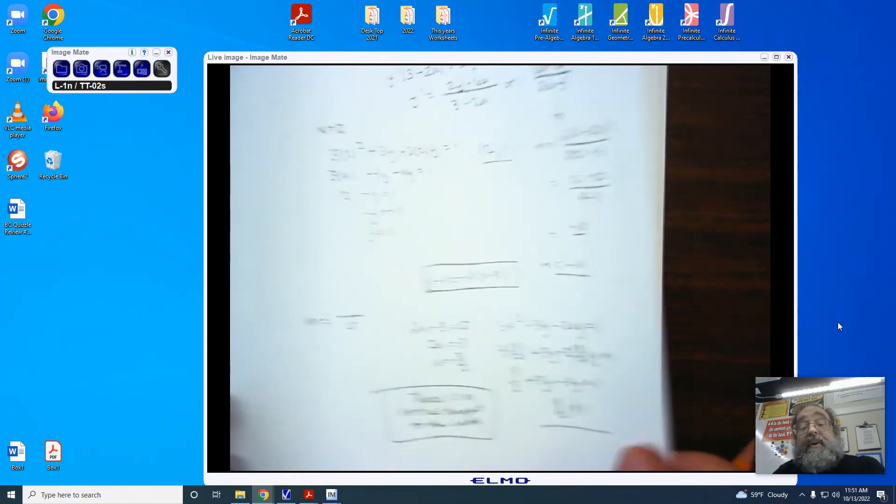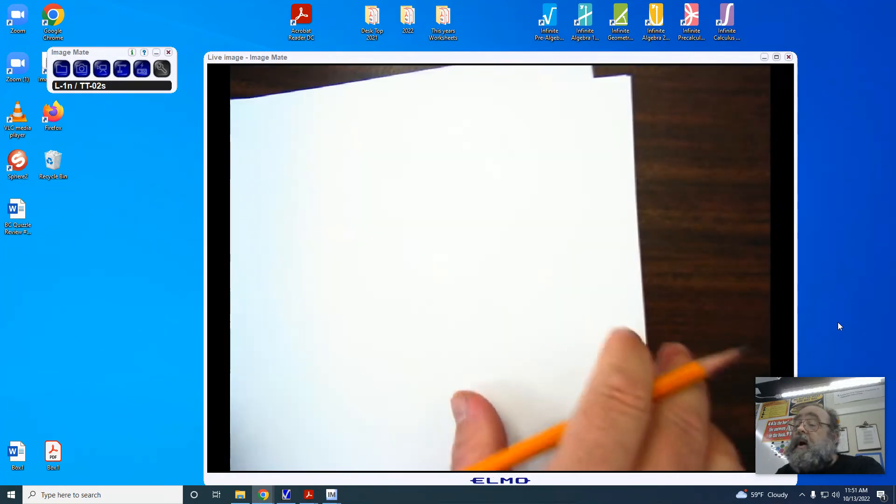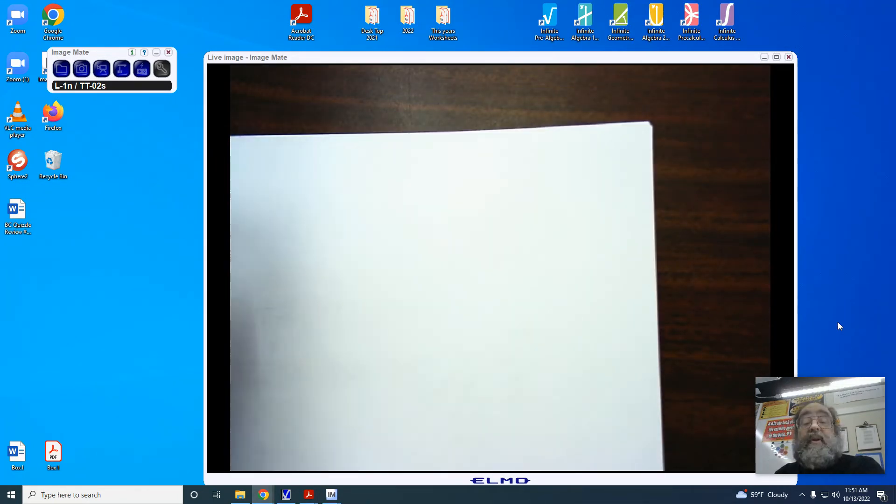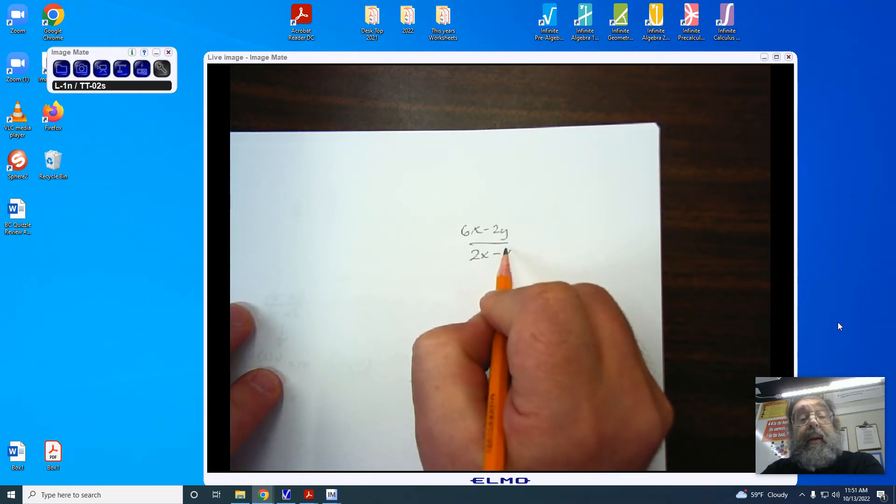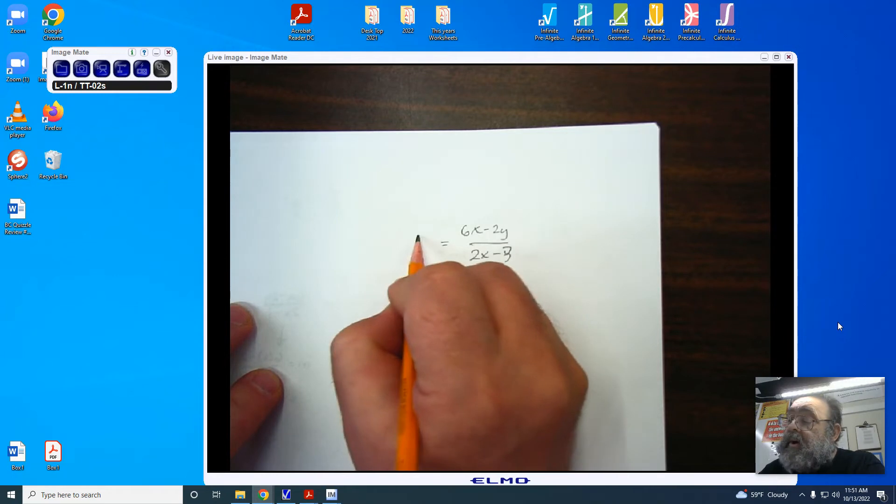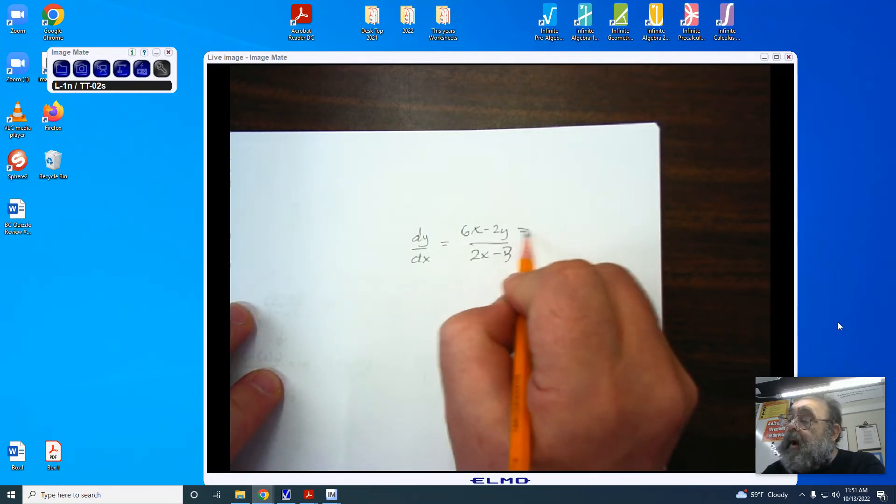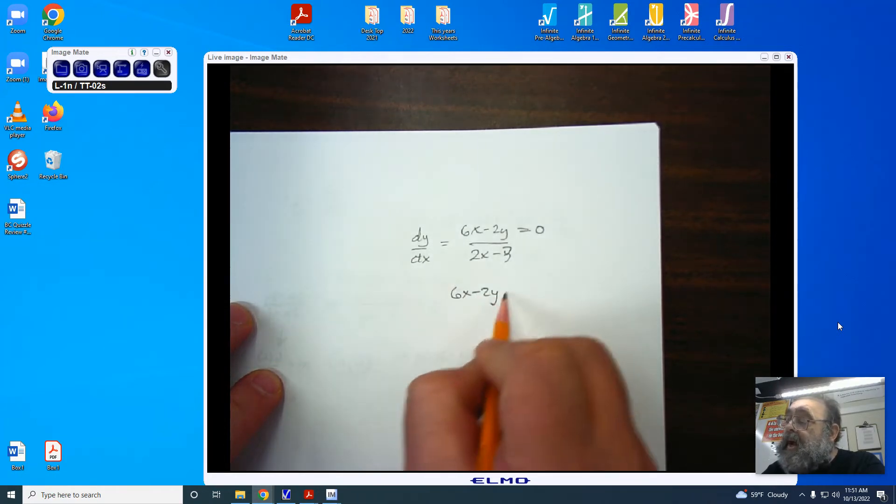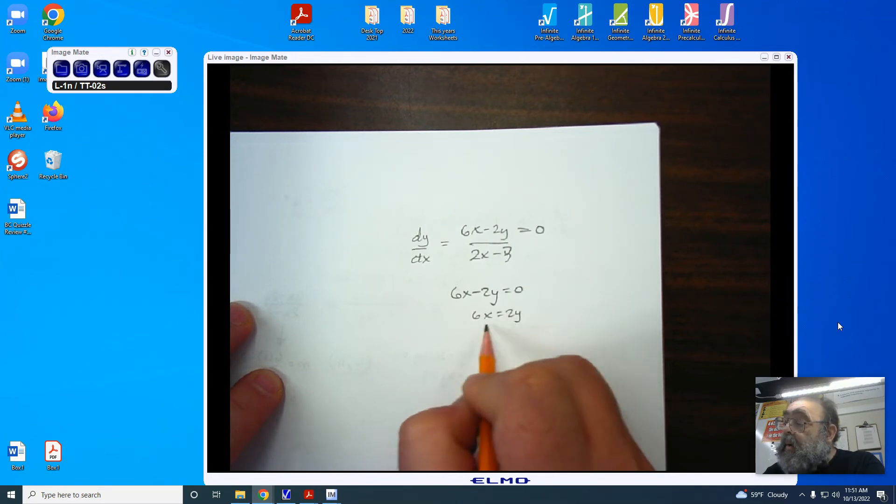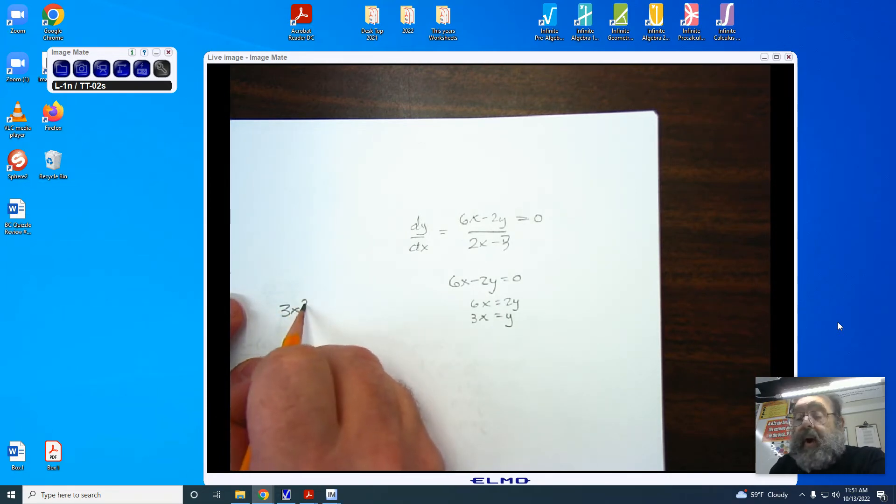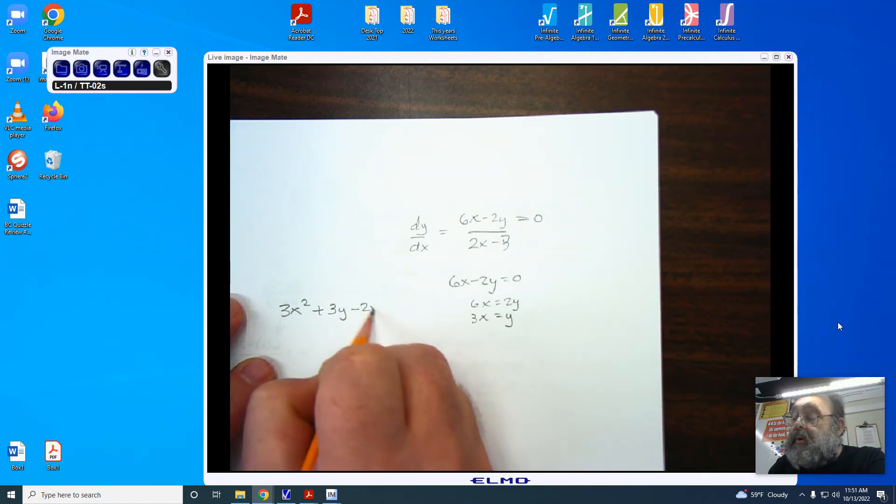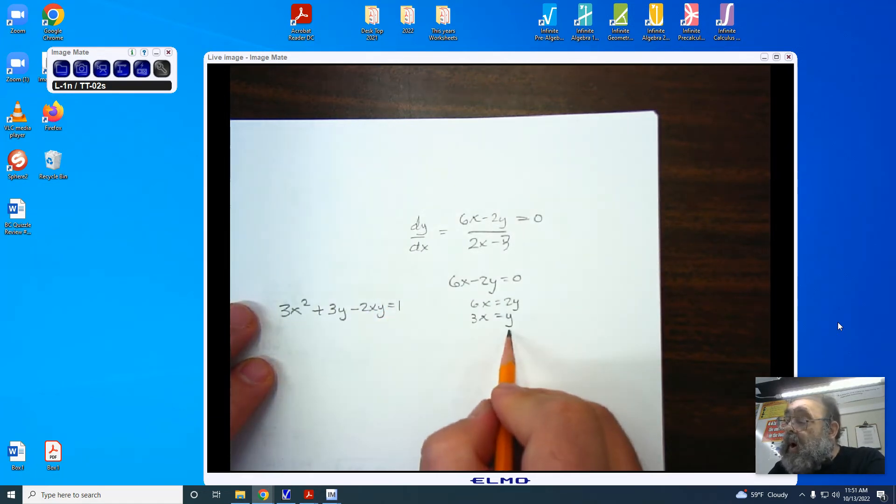The last thing that we are often asked to do is determine when the curve will have a horizontal tangent line. So we're going to have to start right back with our derivative, 6x minus 2y over 2x minus 3. This time we want a horizontal tangent line from our dy dx. So I'm going to take the numerator and set it equal to 0. When is 6x minus 2y equal to 0? When 6x equals 2y or when 3x equals 2y. If I suddenly have 3x equals 2y and I have the original equation, 3x squared plus 3y minus 2xy equals 1, then wherever I see a y, I can plug in a 3x or wherever I see a 3x, I can put a y.